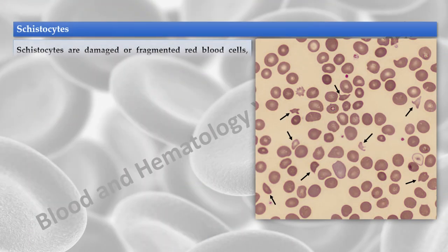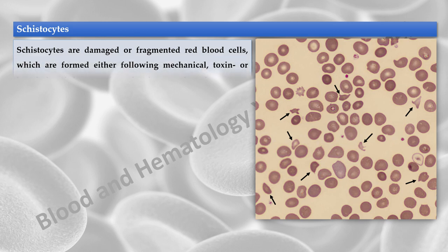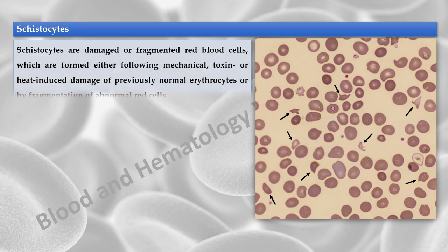Schistocytes are damaged or fragmented red blood cells, which are formed either following mechanical, toxin, or heat-induced damage of previously normal erythrocytes, or by fragmentation of abnormal red cells.